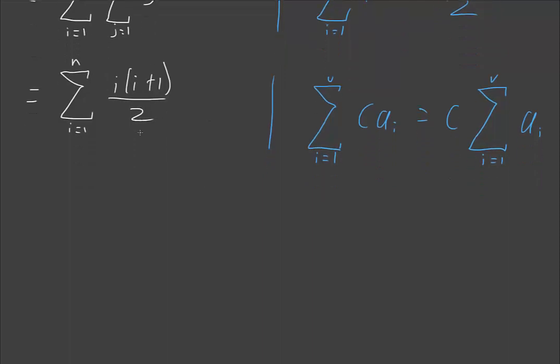If we look at this as a half times that, the first thing we can do is take this half out the front. I'll just do it step by step: i equals 1 to n of one half times i times i plus 1, which is what that is. So we can convert that to one half times i equals 1 to n of i times i plus 1. That's totally a thing we can do using that formula.